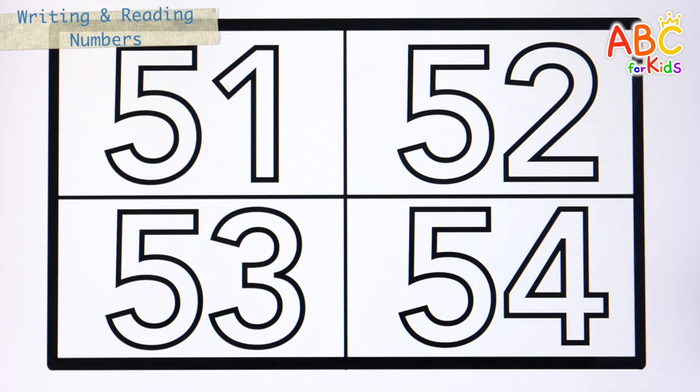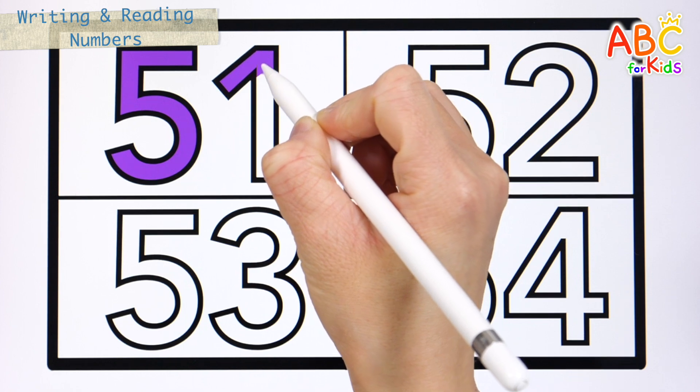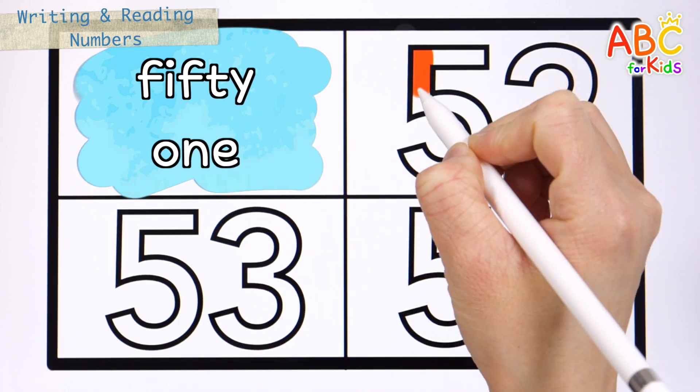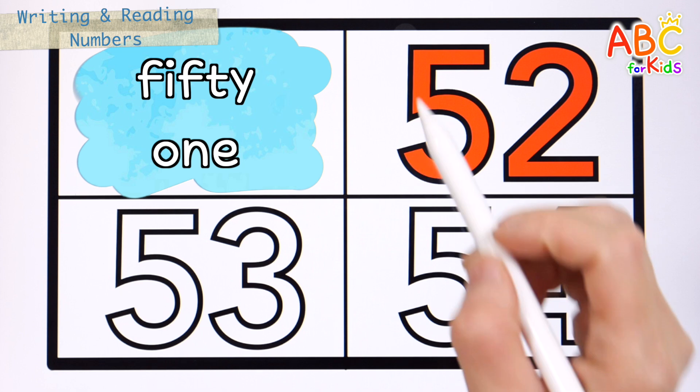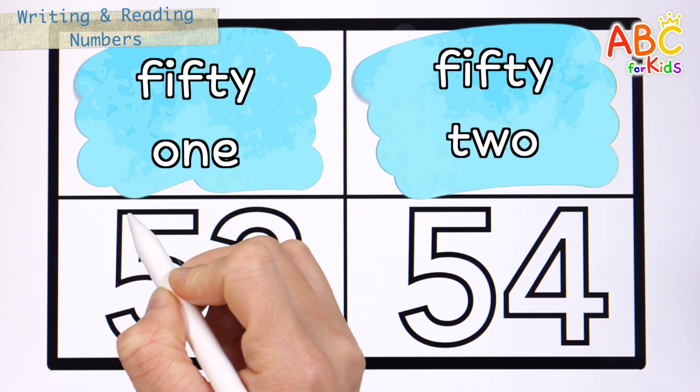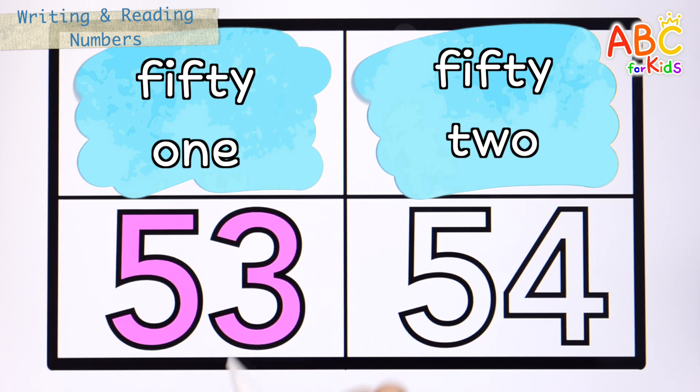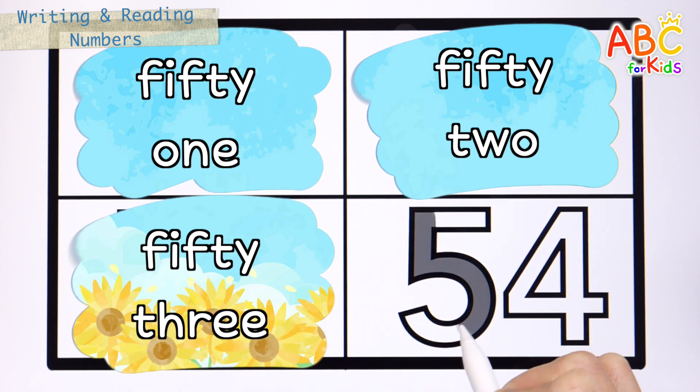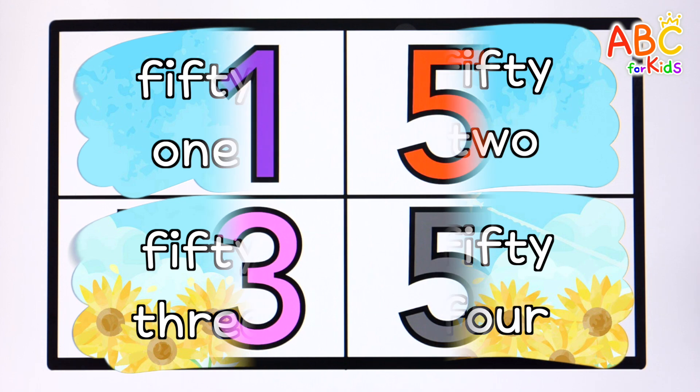Let's write down the numbers from 51 to 54 and read them. Purple number 51. 51. Red number 52. 52. Pink number 53. 53. Gray number 54. 54. Good job!